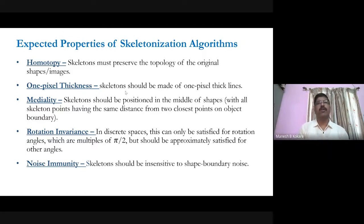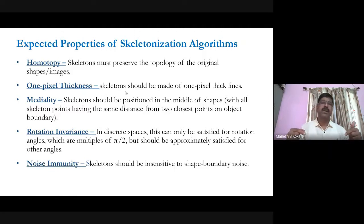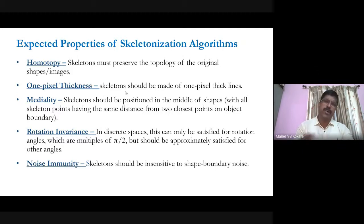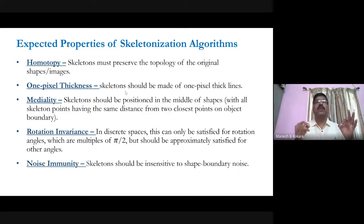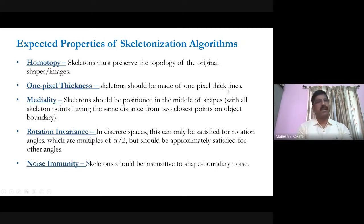The second requirement is that the skeleton obtained should be of one pixel thickness. Imagine the skeleton of the human body — you get only the structure of the body. When representing this in image form, the structure should be only one pixel thick. So the skeleton should be made of one-pixel-thick lines. This is the second requirement when developing any skeletonization algorithm.